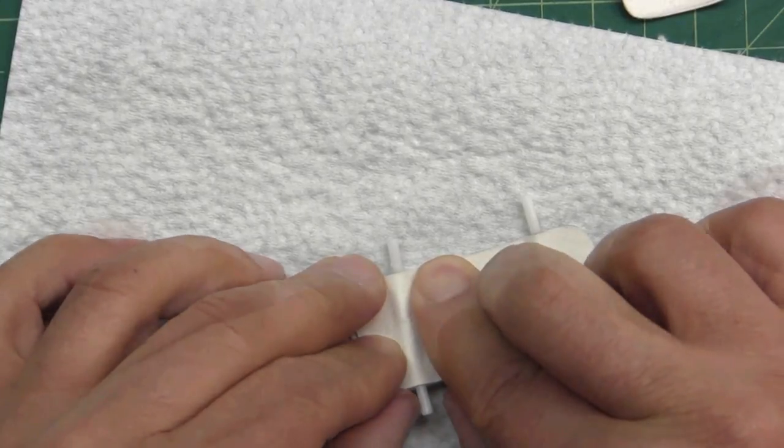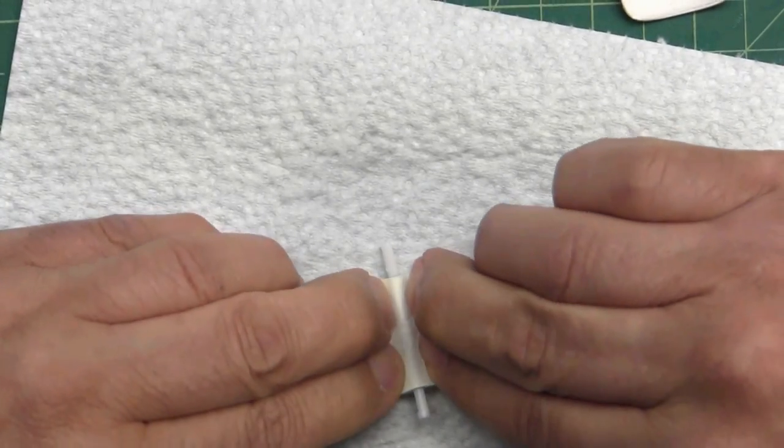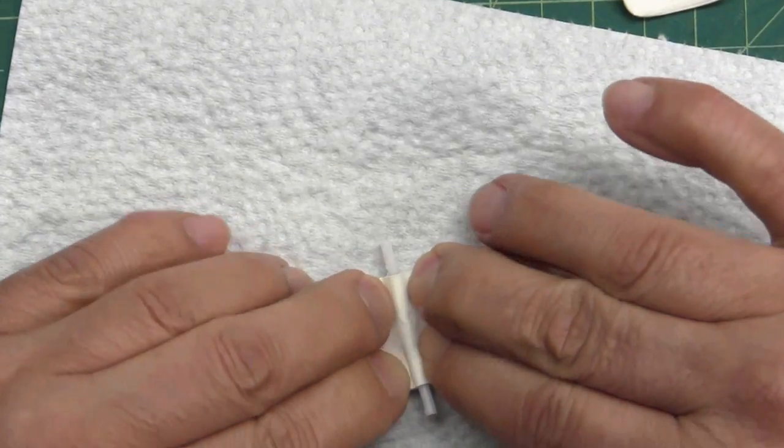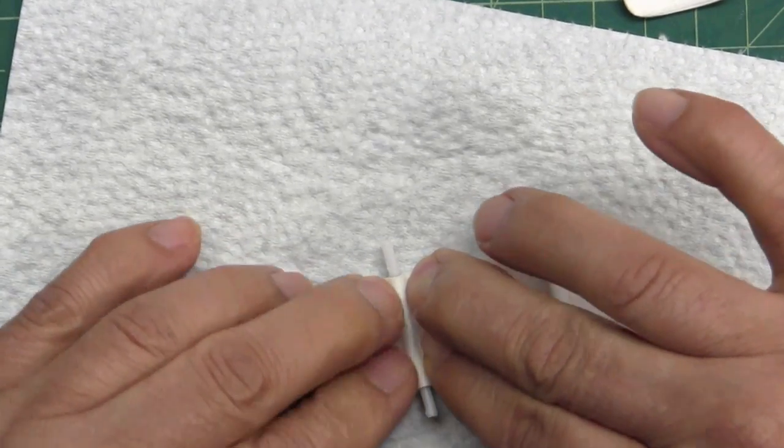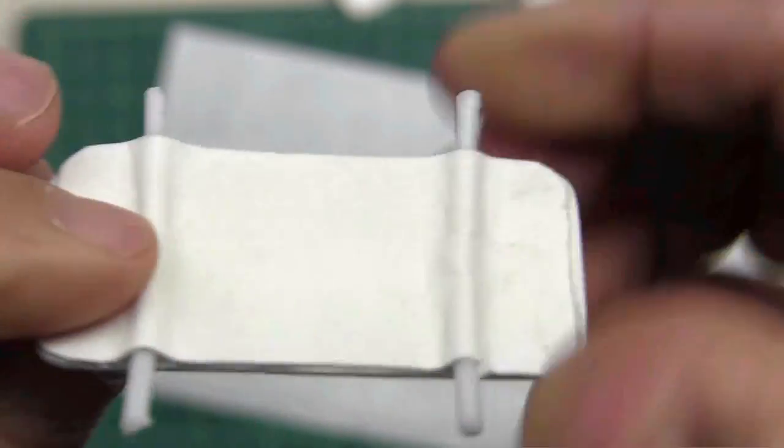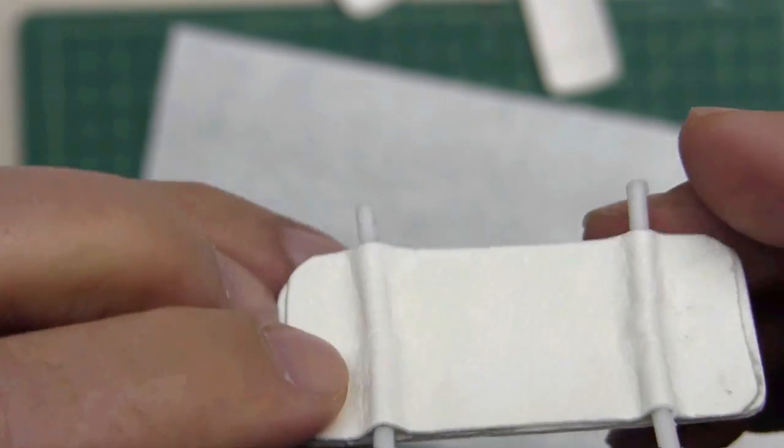It'll take a little work. The paper is going to resist forming over the wax initially because it's not soft, but eventually, within a matter of a minute, it'll work its way down. Now, before I get too involved with finessing this and working it down, I'm going to apply my second piece.